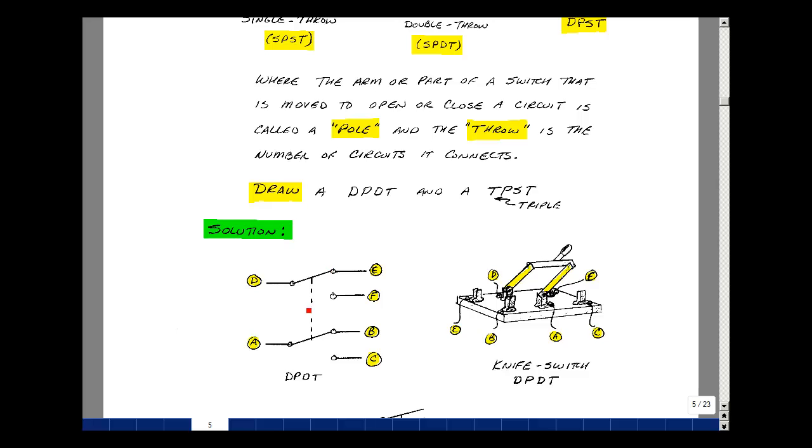So a double pull means I have to have two of these arms or connectors, and then I'm gonna have a double throw which means I'm gonna connect to two circuits. So here's my first circuit and my second circuit, first circuit and second circuit. This dotted line here means that both switches are acting at the same time.